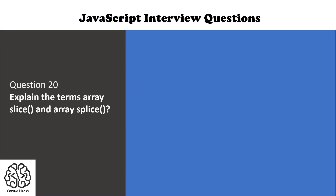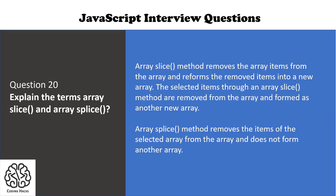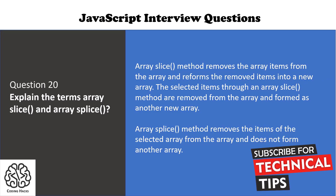Question number 20 is: explain the array slice method and the array splice method. This is a very important question. The array slice method removes items from the array and returns the removed items into a new array. The array splice method removes items from the selected array but does not form another array.